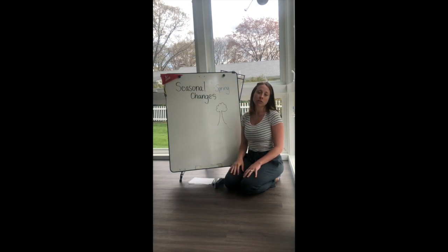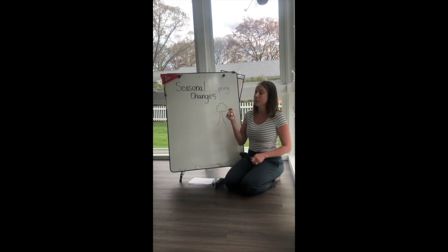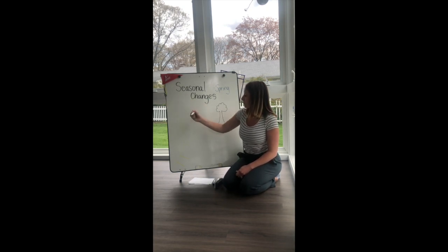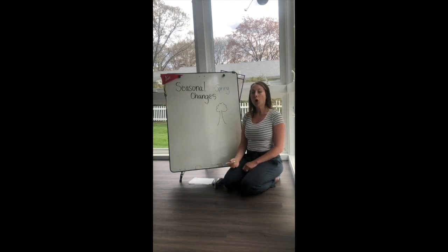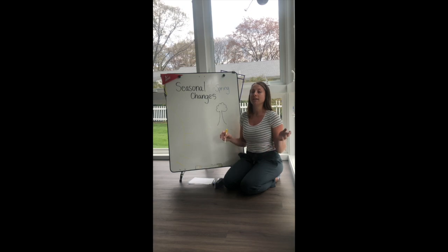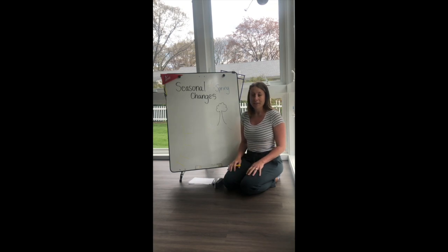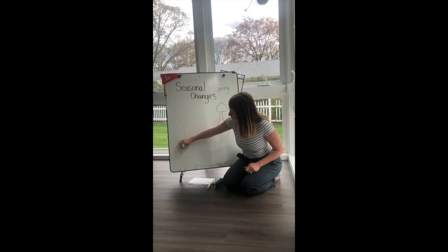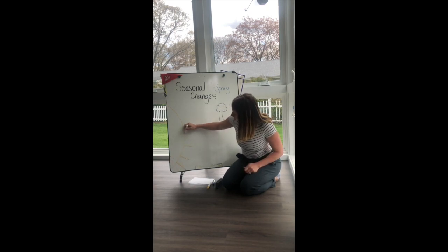What's another seasonal change? What else do we know changes throughout the year? Maybe you guys are thinking about daylight. I'm going to draw a big old sun on the side of the board over here. We have a whole lot of sunlight right now. The sun comes up at a regular hour in the morning and it stays for a long time — it's almost going down around after seven now, which is amazing. So daylight changes.